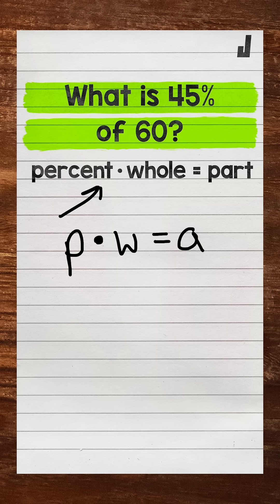What I like to do is always find the percent and the whole first. We can do that by looking for the keyword of. We're going to have a percent of a whole. Of is associated with the whole.